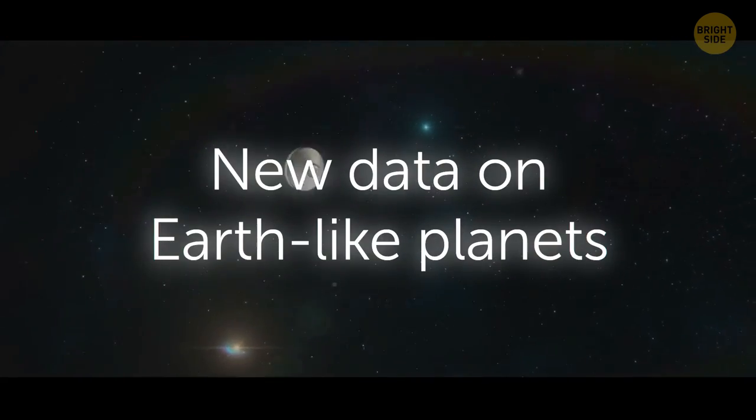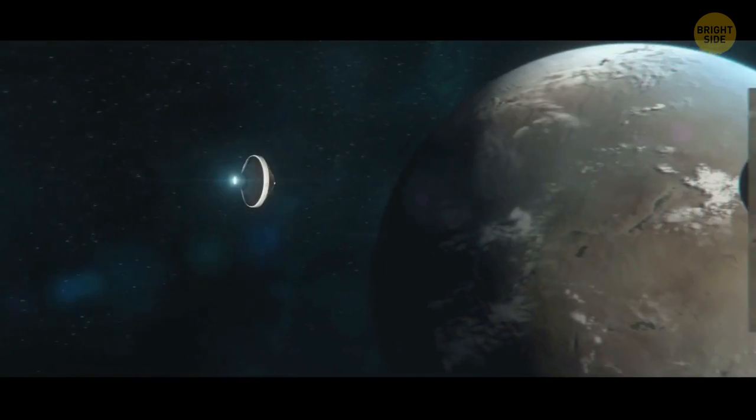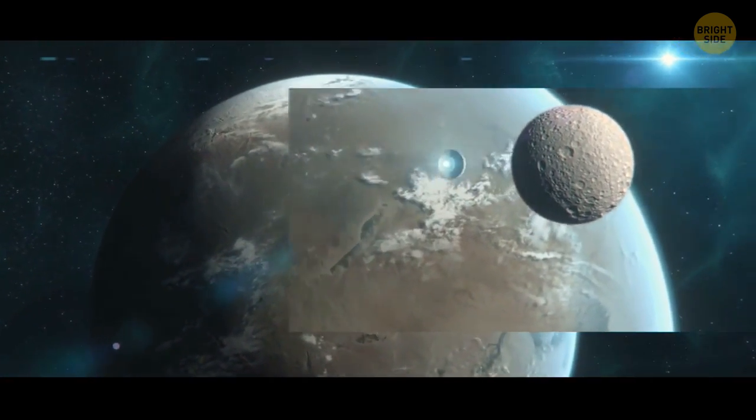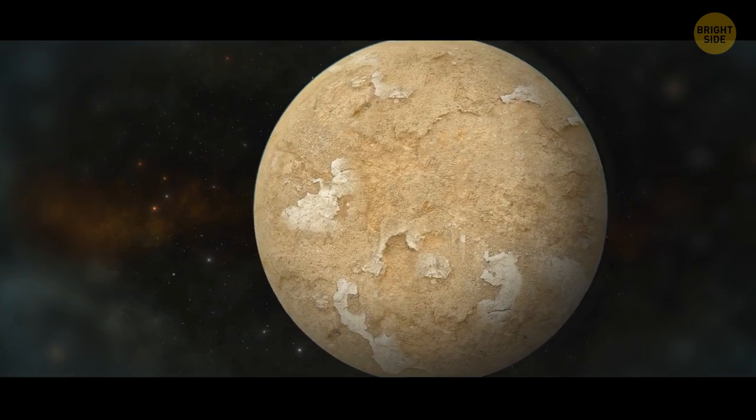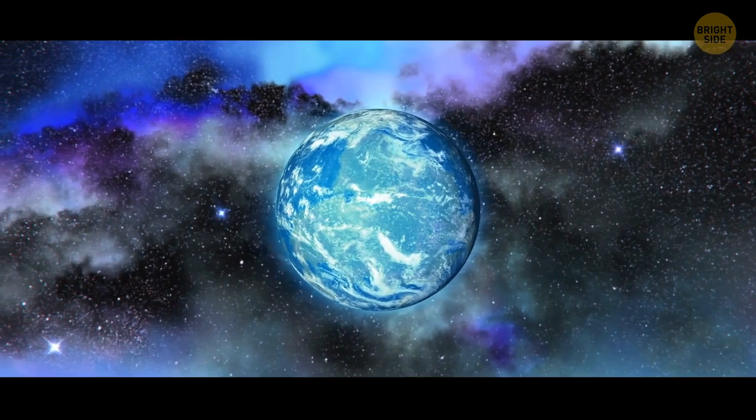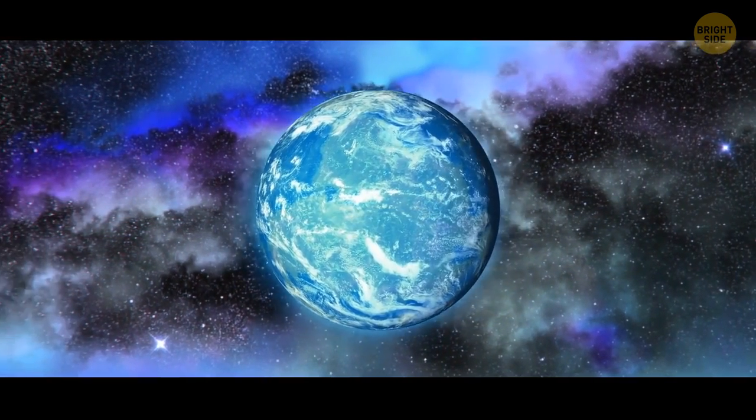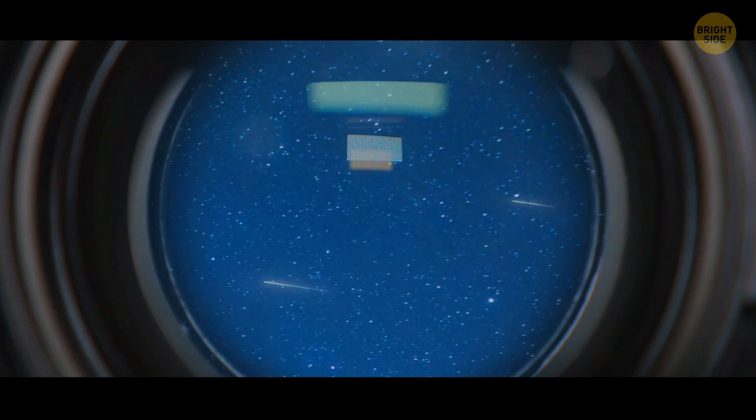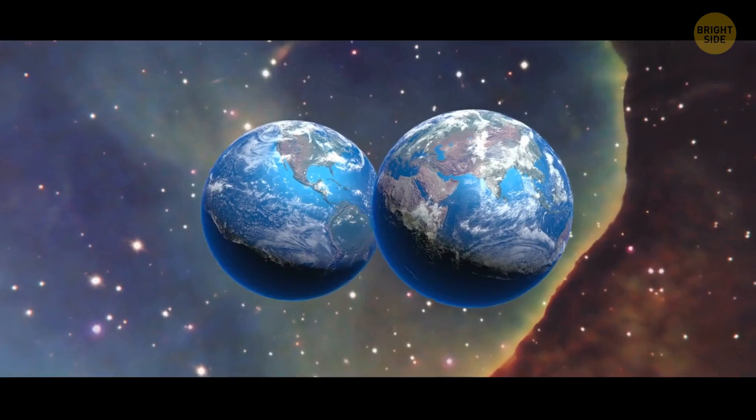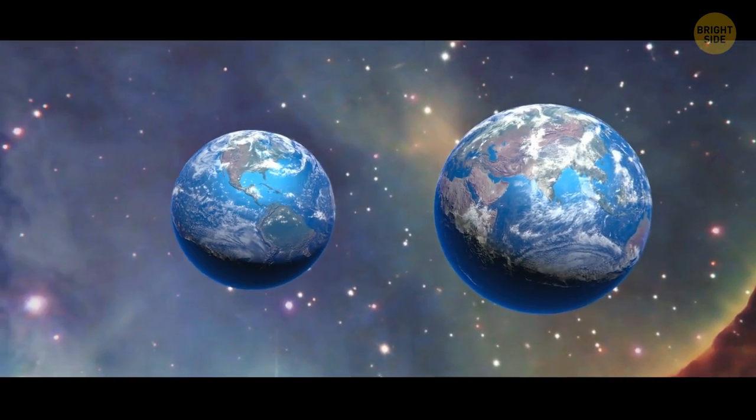New data on Earth-like planets. Since its launch in 2009, the Kepler Space Telescope has discovered lots of exoplanets orbiting distant stars. Some of them have an Earth-like mass, composition, and orbits. NASA plans to launch a new generation of telescopes in the 2040s. They'll help us find real twins of our planet and even get pictures of their surfaces.